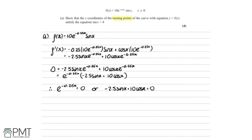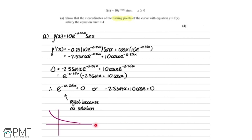If we think about the first case quickly, e^(−0.25x) = 0 actually can't be solved. This makes sense because if we sketch it, y = 0 acts as an asymptote — the exponential never touches 0, so there are no solutions. So we reject that and work with the second equation.